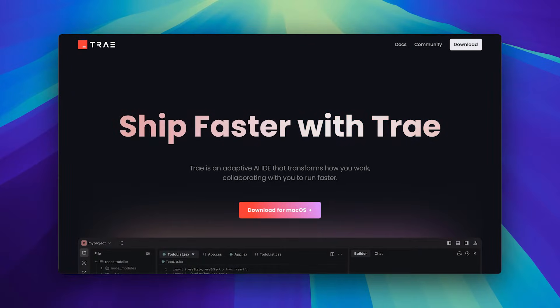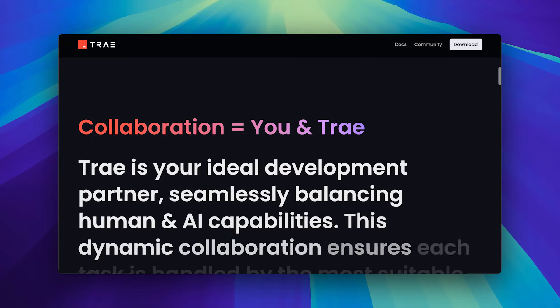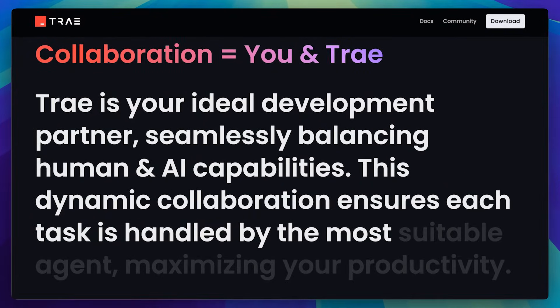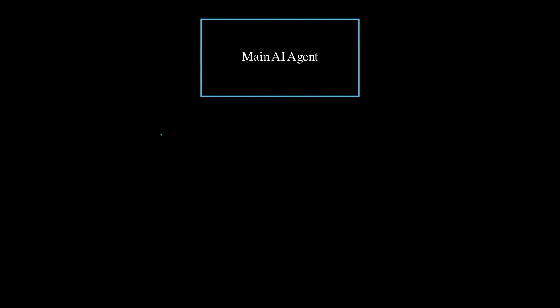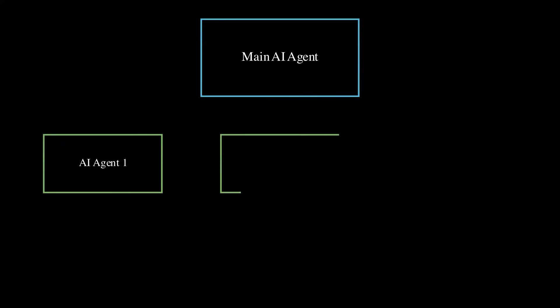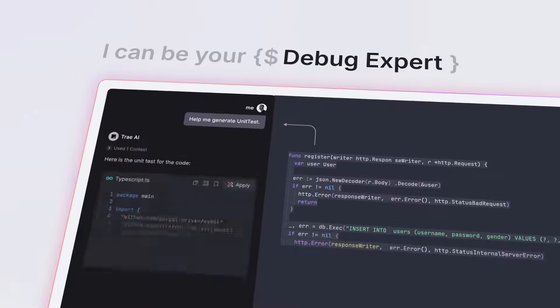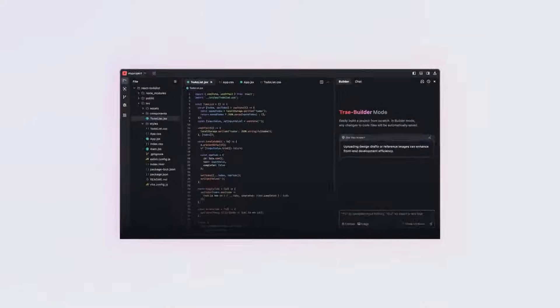This is the website for Trey, and if we scroll down, you'll see they've described Trey as your ideal development partner, seamlessly balancing human and AI capabilities. It's all about dynamic collaboration that ensures every task is handled by the most suitable agent. What they've done here is have a single agent control multiple agents, automatically assigning tasks that are best suited for each one, introducing a fully agent-based workflow. You can't choose the models or use different LLMs for different use cases — one main agent assigns tasks to the smaller agents automatically.